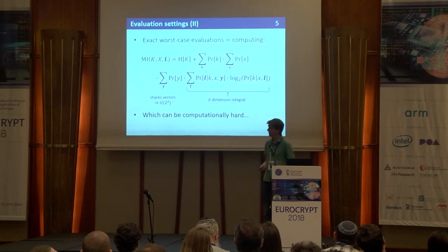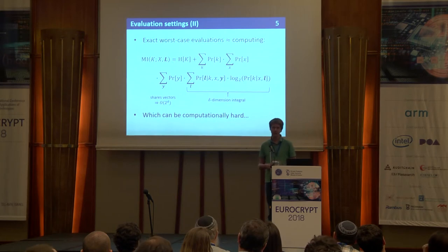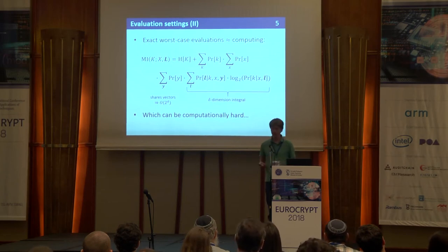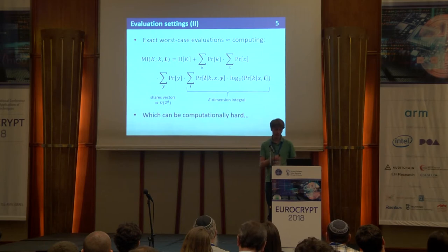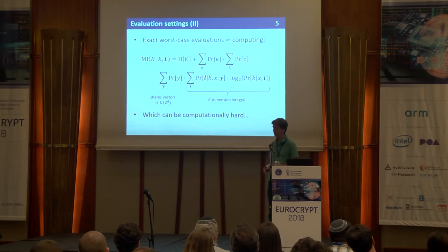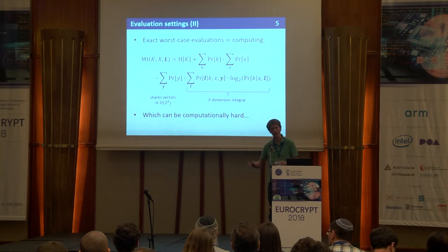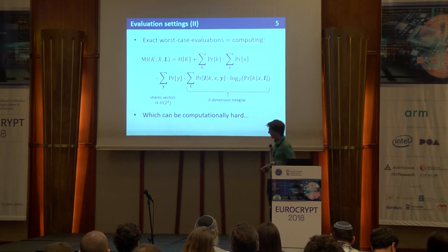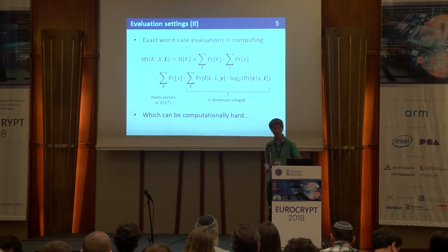For worst-case evaluation, one way to express this is: we want to evaluate the mutual information between the key, the plaintext X (public knowledge), and the matrix of all leakages. Computing that requires summing over all keys, all plaintexts, all shared vectors, and performing a delta-dimension integral over all possible noise dimensions. It's easy to see this rapidly becomes very difficult to compute, just from time complexity alone, because the shared vectors increase exponentially in the number of time points.